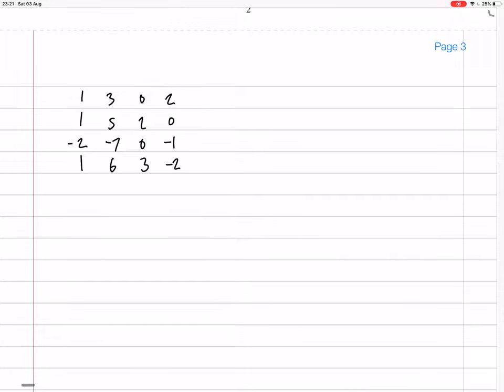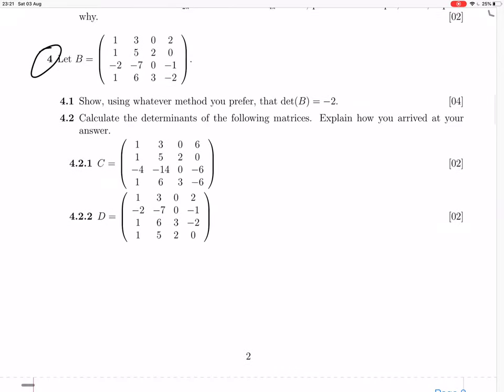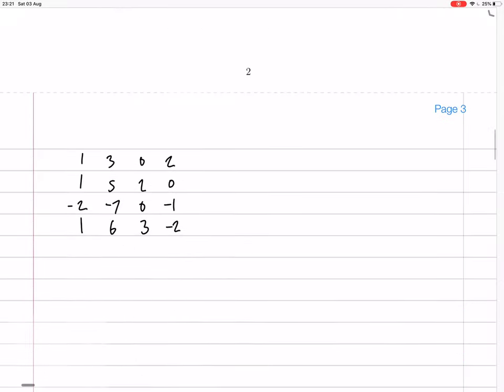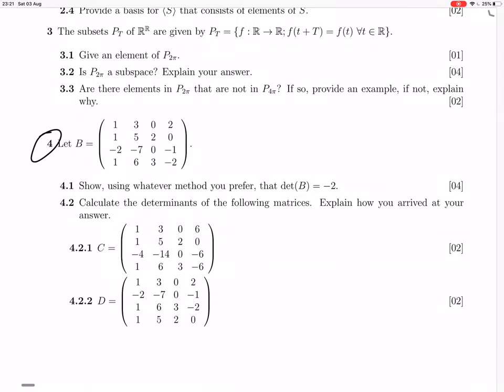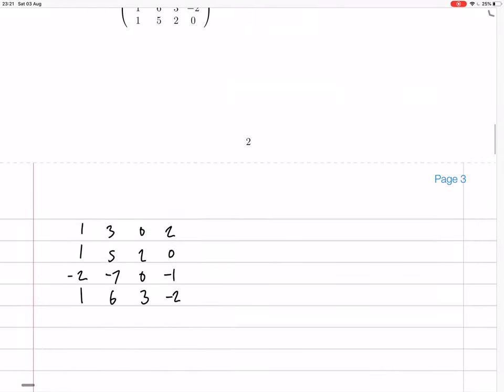Let's just check that. Top row: 1, 3, 0, 2. Then 1, 5, 2, 0. Then minus 2, minus 7, 0, minus 1. And then 1, 6, 3, minus 2. Yes.